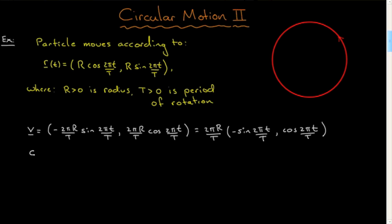So now let's go and compute the speed. So the speed is the magnitude of the velocity, and again you'll see immediately the advantage of pulling this out. So now that's the absolute value of 2πR over T, of course that'll just be positive, times the length of this vector.